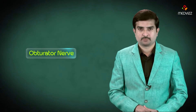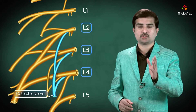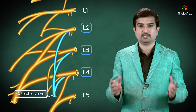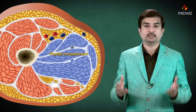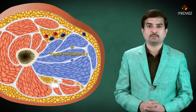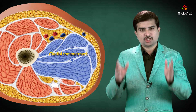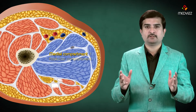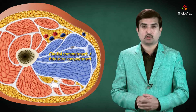The obturator nerve arises from the anterior division of L2 to L4 spinal nerves. It supplies mainly the medial compartment of the thigh and is the chief nerve of the adductor compartment, also called the medial compartment.